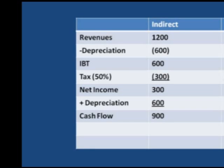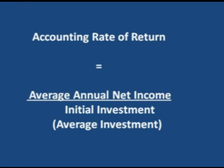The formula for the accounting rate of return is to take the average annual net income — I'm going to give you a second to write this down. The accounting rate of return is the average annual net income divided by either the initial investment or the average investment.